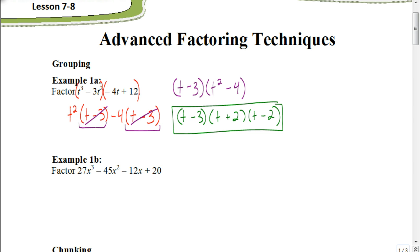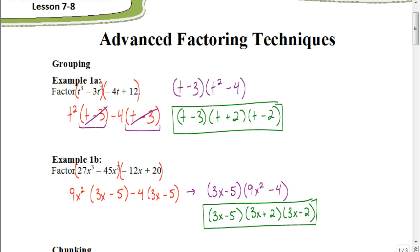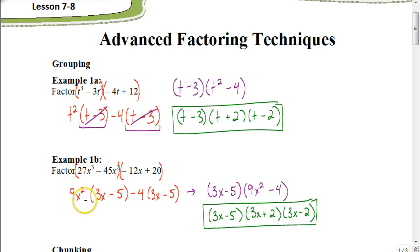Pause the video and hit play when you're ready to check your answer. Let's check how you did. You should have started by grouping the first two terms and the last two terms — and it's very important where you put your parentheses. Make sure you include the sign with the last two terms. For the first pair, 9 is the greatest common factor of 27 and 45, and x squared is the largest variable we can factor out, so we factor out 9x squared, leaving 3x minus 5.